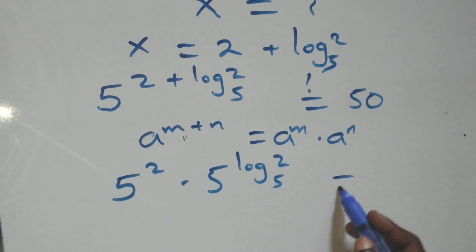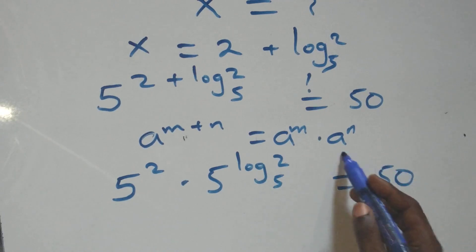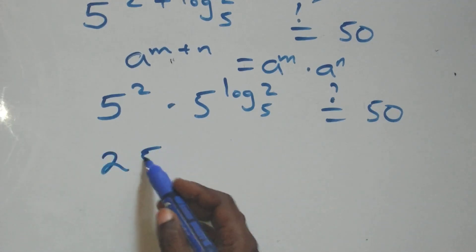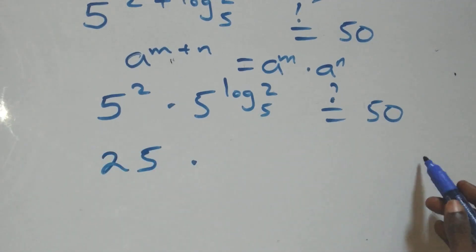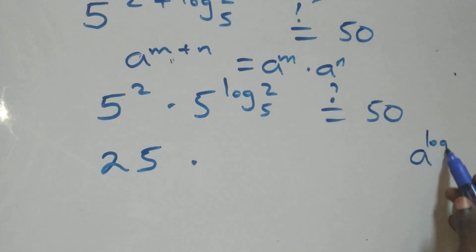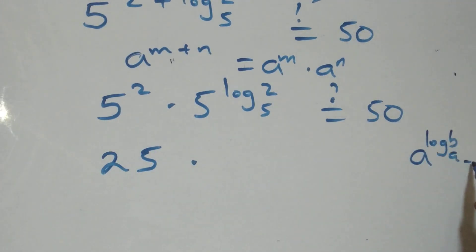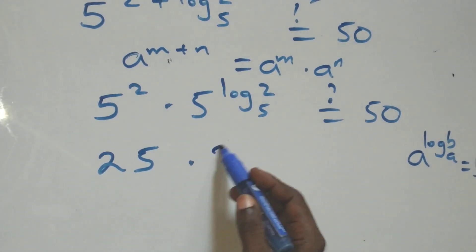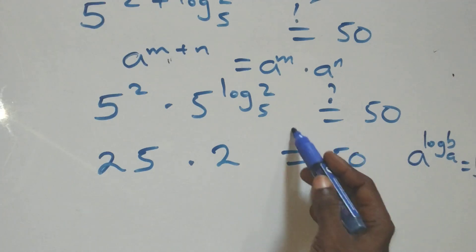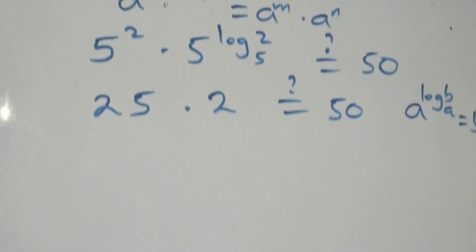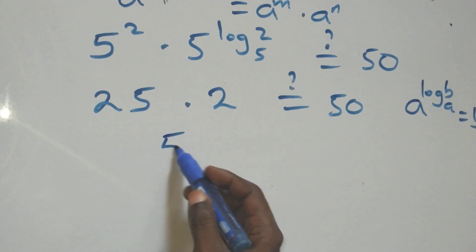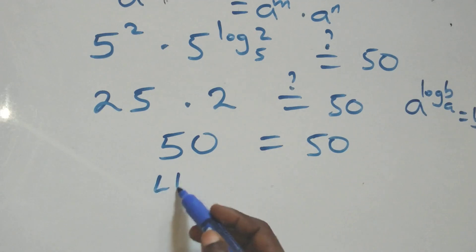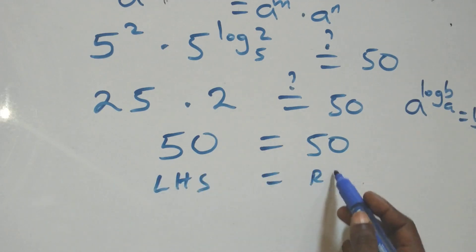We evaluate: 5² = 25. Then, applying the logarithm law where a^(log_a(b)) = b, we get 5^(log₅(2)) = 2. So 25 × 2 = 50, which equals 50 on the right-hand side. The left-hand side equals the right-hand side.